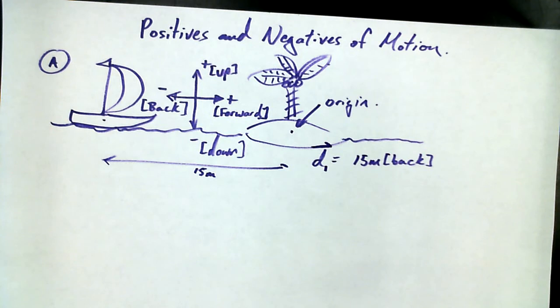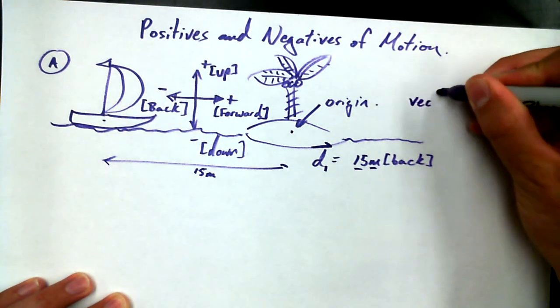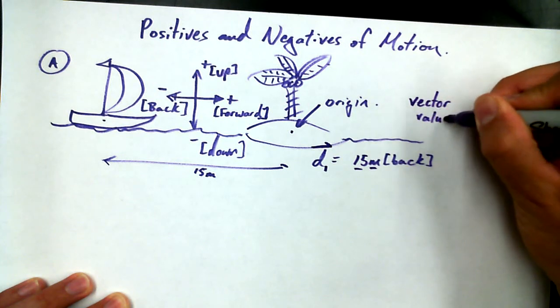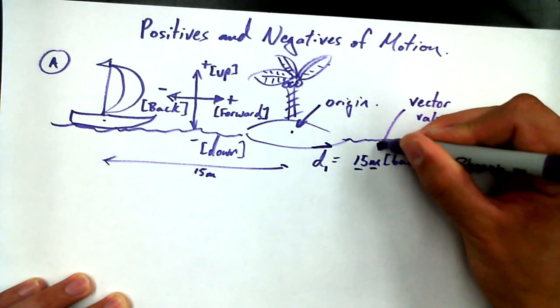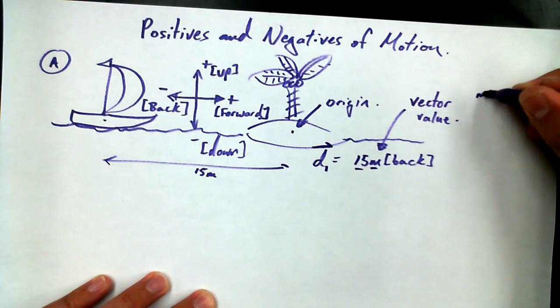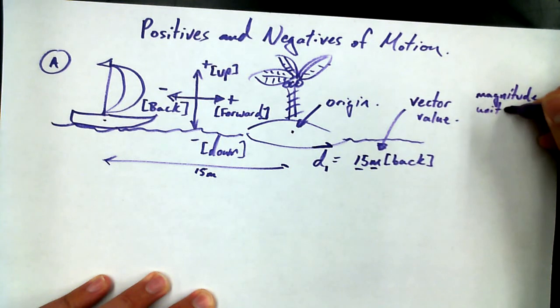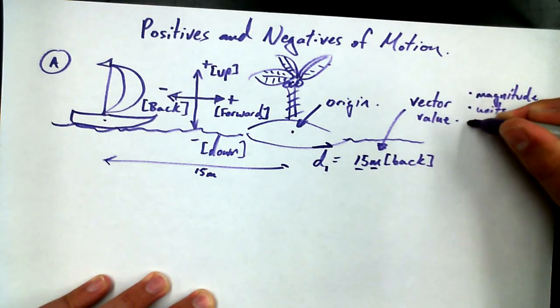And the arrow indicates that built into this information, there's going to be a direction. And any time you have a piece of information that has a direction associated with it, has units of measure associated with it, and has a quantitative value associated with it, we say that it's a vector value. So this guy here is a vector value, because it has those attributes. Magnitude, that's the number. Units, that's the meters in this case. And a direction. It's a vector.